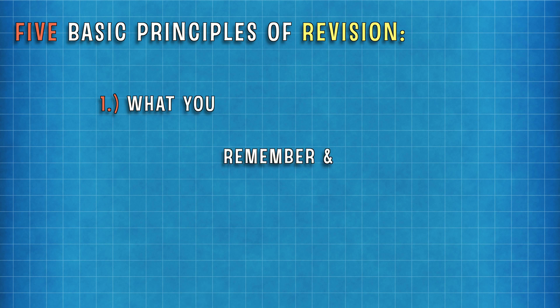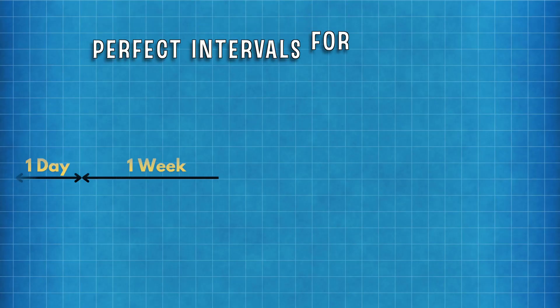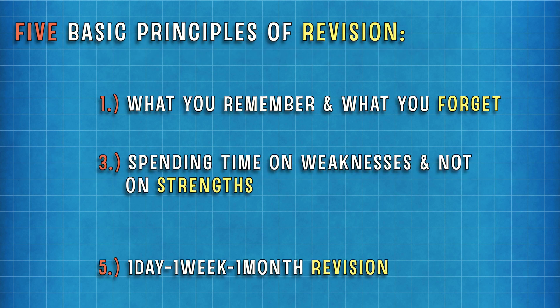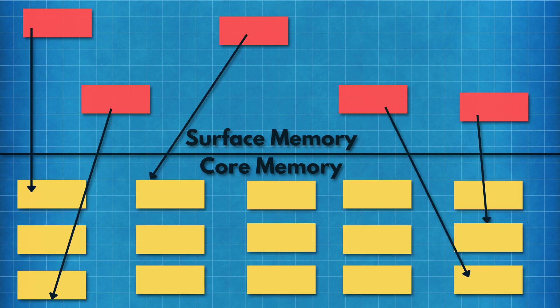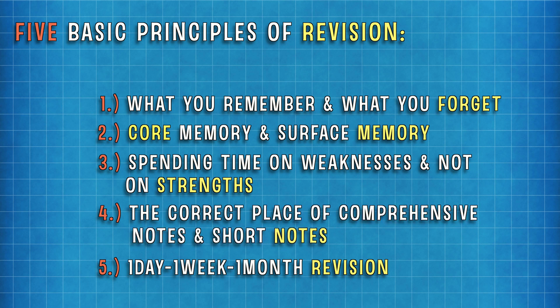So we understood that forgetting is a very important part of memorizing, and how we are supposed to give perfect intervals so we don't forget too much. We give ourselves sufficient time to find out what we are weak in — that's how we do one-day, one-week, and one-month revision. We spend more time on what we are weak in and less on what we are strong in. We understood the difference between core and surface memory, the importance of comprehensive notes, and that short notes are to work on your weaknesses.